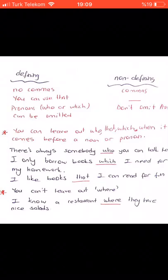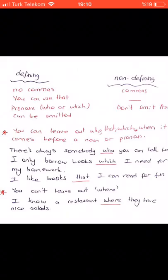Defining relative clauses: no commas, you can use 'that,' and pronouns who or which can be omitted. Non-defining relative clauses: commas are used, we can't use 'that,' and pronouns cannot be omitted — they always stay between the commas providing extra information. You can leave out who/that/which when it comes before a noun or pronoun in defining clauses: 'There is always somebody you can't talk to'; 'I only borrow books I need for my homework'; 'I like books I can read for fun.'